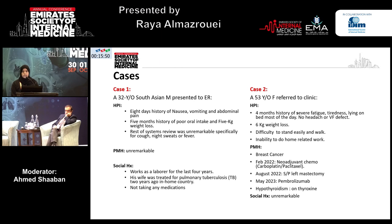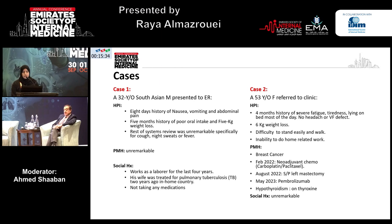The second case is a 53-year-old female referred to the clinic with a four-month history of severe fatigue, tiredness, lying on the bed most of the time, no headache, no visual field defect, but with significant weight loss. It was impairing her life with inability to do home-related work. Her past medical history was significant for breast cancer, for which she was treated with neoadjuvant chemotherapy followed by surgery, and after that she was started a few months back on the immune checkpoint inhibitor pembrolizumab.